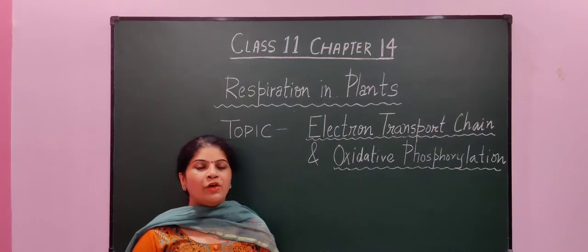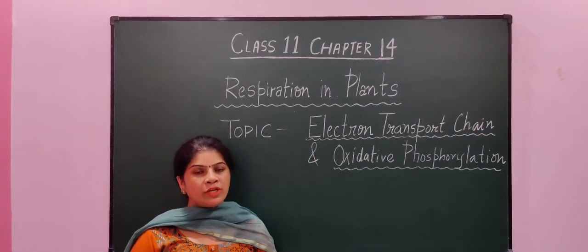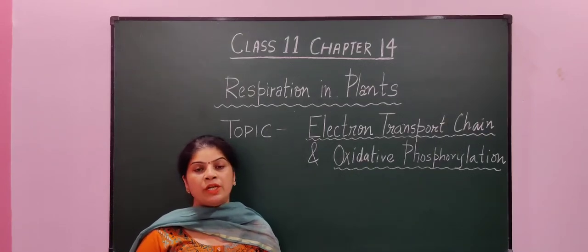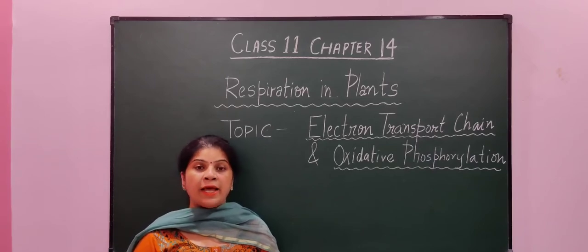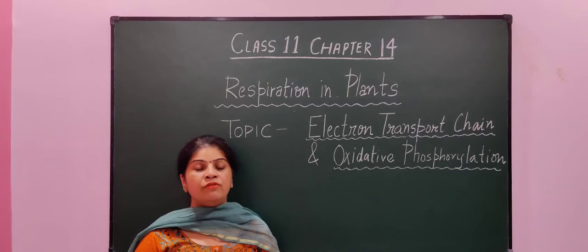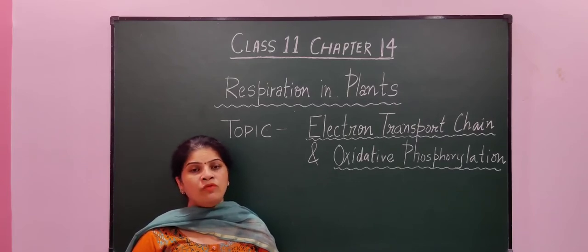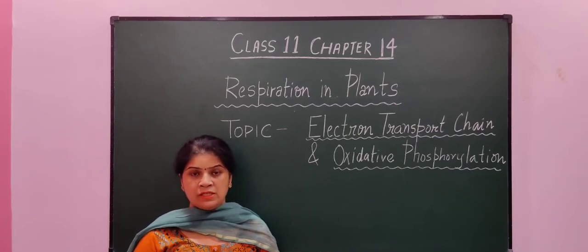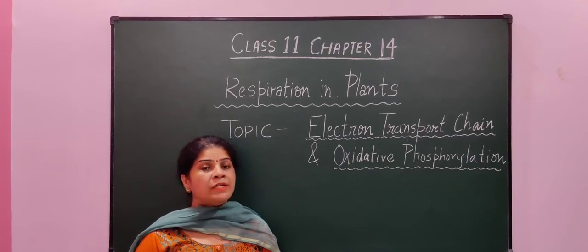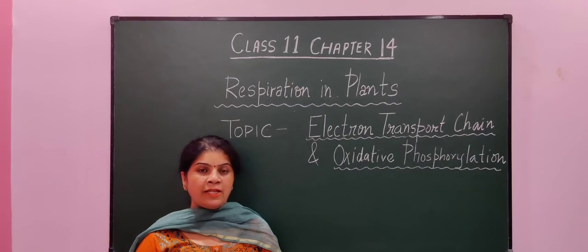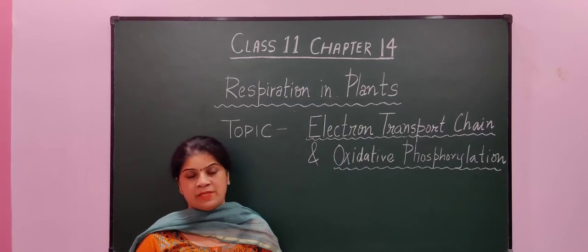Hello students. We are doing the 14th chapter, that is respiration in plants, and our today's topic is electron transport chain and oxidative phosphorylation. Till now we have discussed the three steps of aerobic respiration: first glycolysis, second oxidative decarboxylation, and third Krebs cycle.